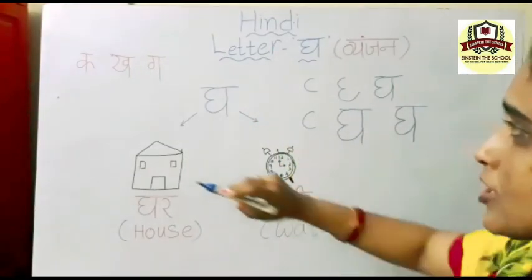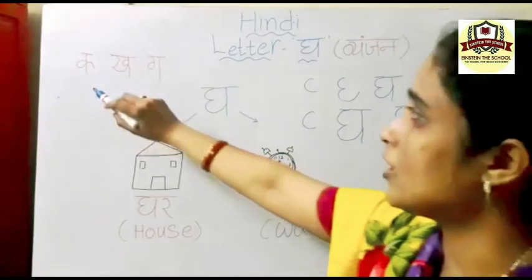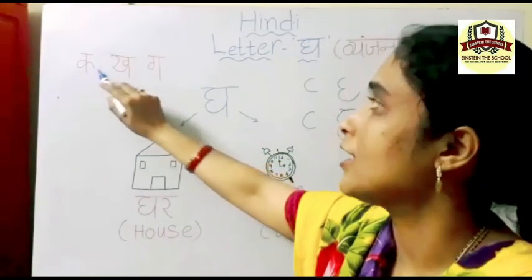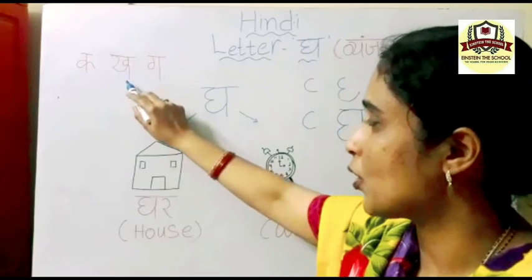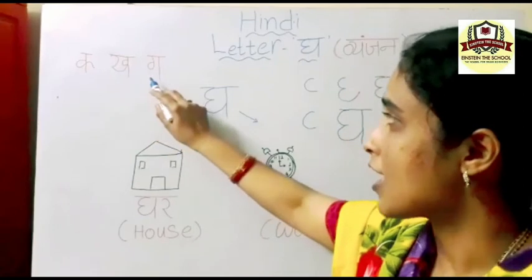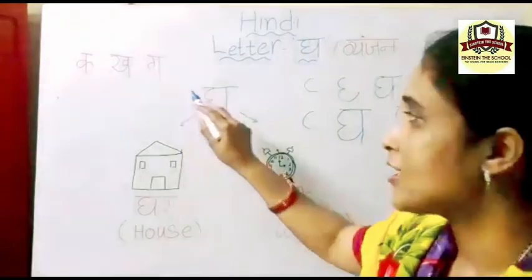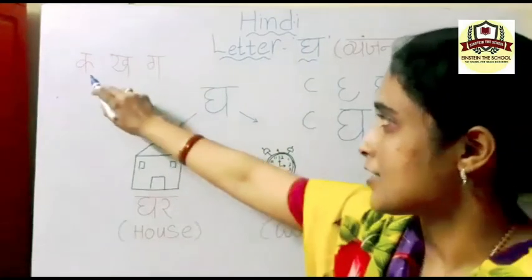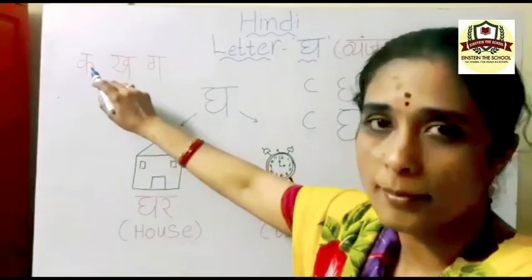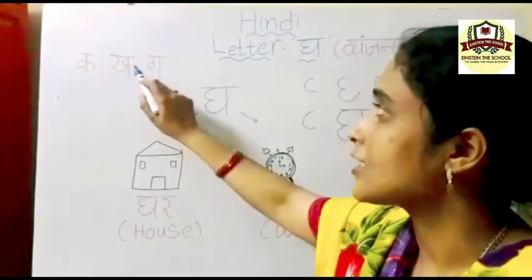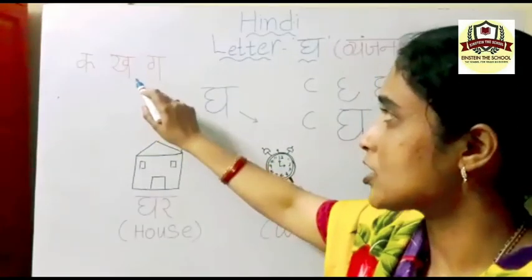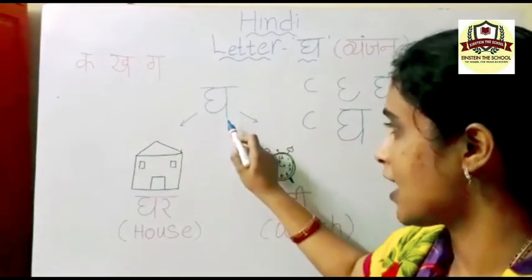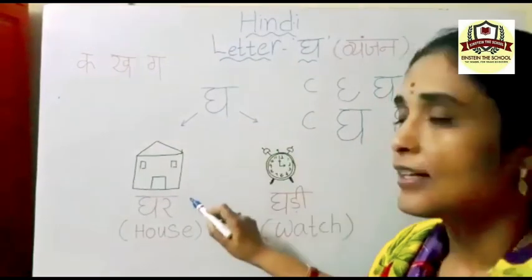Now what are the previous letters we have learnt? Gha — Ghaase, Kamal. Kaase, Kargosh. Gaase, Gamla. Gaase, Ghar. Kaase, Kamal. Kaase, Kargosh. Gaase, Gamla. Gaase, Ghar.